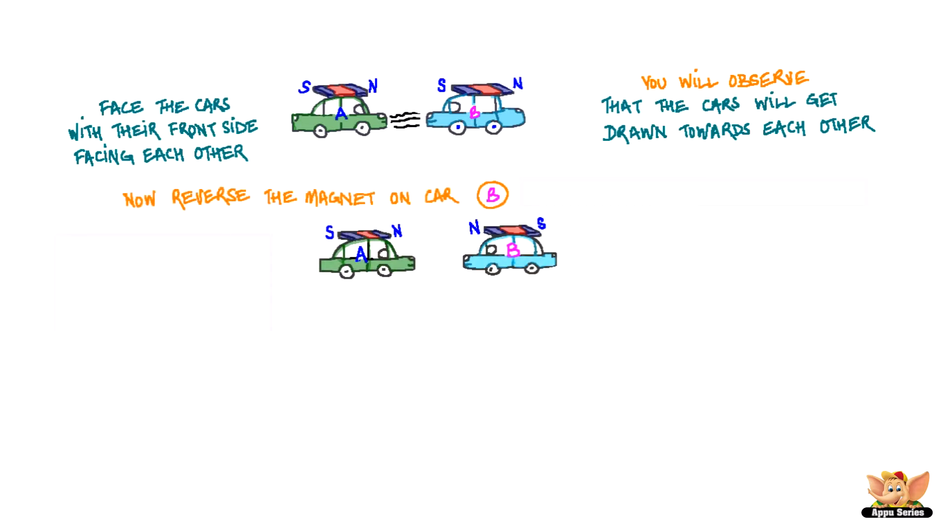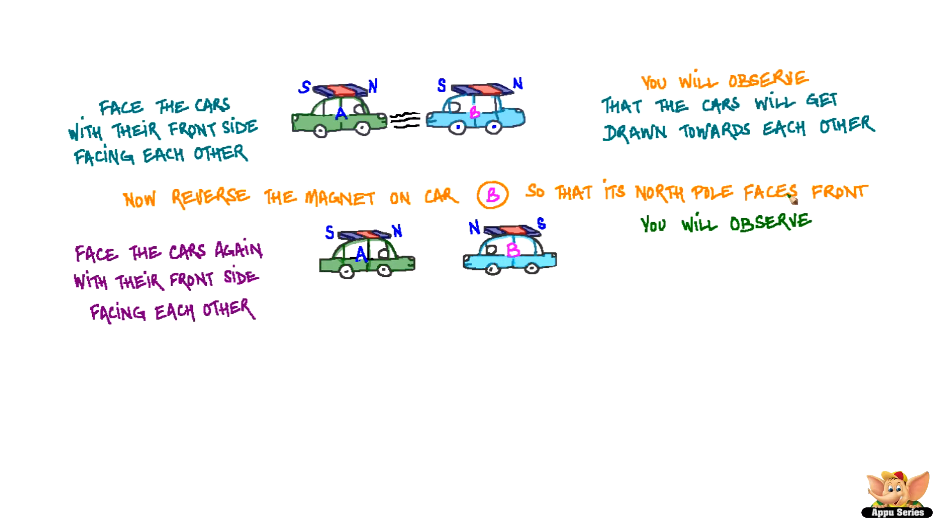Now, reverse the magnet on car B so that its North Pole faces the front instead of the South Pole. Face the cars again with their front side facing each other. You will observe that the cars will get pushed away from each other.